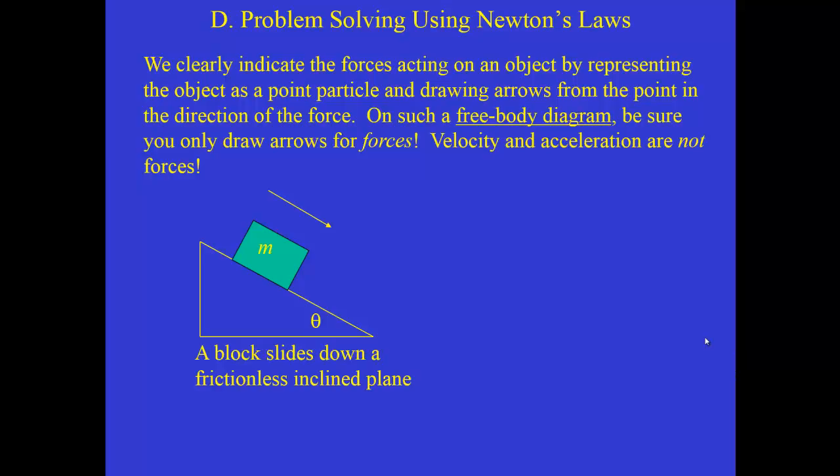For example, if a block is sliding down an inclined plane and that plane is frictionless, this sketch shows the arrow indicating the motion of the object down the plane, and that's fine. But when we go to draw a free body diagram, we represent the block as a point particle. We draw in the surface of the inclined plane as a dotted line, and we indicate the only two forces that are truly acting on this object.